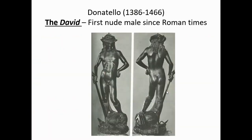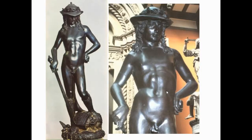Now we move on to Donatello, who was a sculptor. His David can be found in Florence in a museum known as the Bargello. This was the first nude male sculpture since Roman times — with the rise of Christianity after the fall of Rome, there was much greater emphasis on modesty and not depicting the naked human body. When he made the David it was revolutionary. I like to call it the effeminate David — he has an effeminate pose, long hair, a hat, and is standing on Goliath's head.